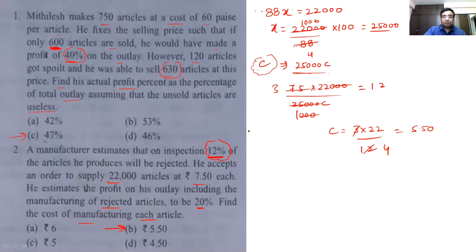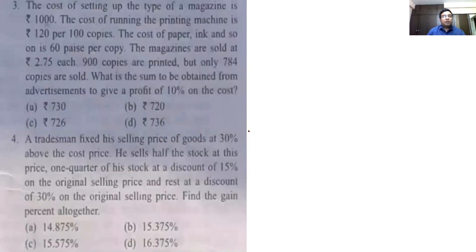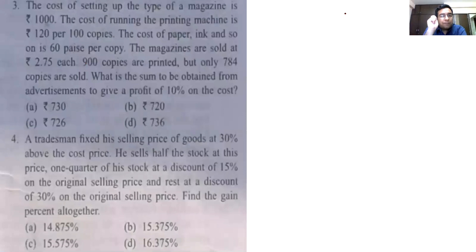The cost of setting up the type of magazine is Rs.1000. The cost of running the printing machine is Rs.120 per 100 units. The cost of paper, ink and so on is 60 paise per copy. The magazines are sold at Rs.2.75 each. 900 copies are printed but only 784 copies are sold. What is the sum to be obtained from advertisements to give a profit of 10% on the cost?